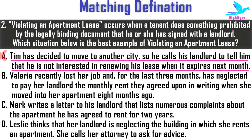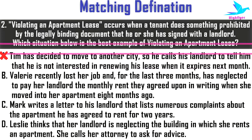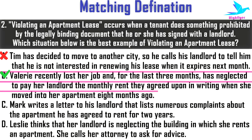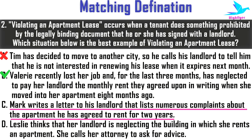In option one, the tenant is well within his rights to discontinue the lease whenever he wants, so no lease is violated. Next option: Valerie recently lost her job and for the last three months has neglected to pay her landlord the monthly rent they agreed upon in writing when she moved into her flat eight months ago. Here, the landlord and tenant agreed upon a rent amount, but the tenant has failed to pay — this is definitely violating an apartment lease.